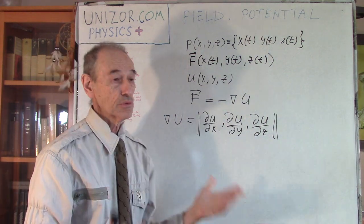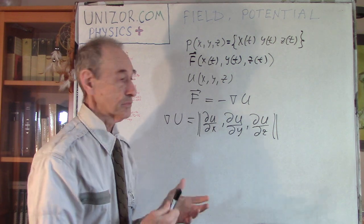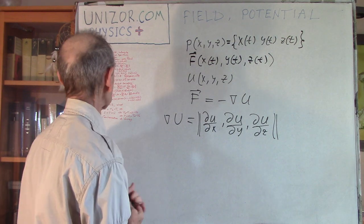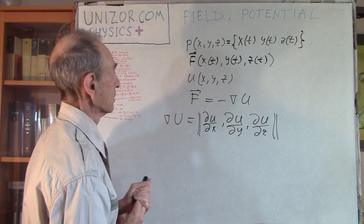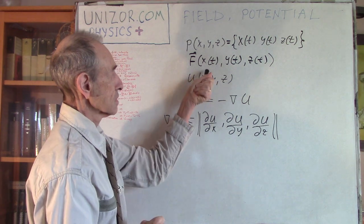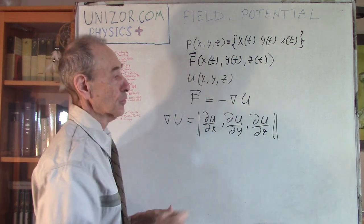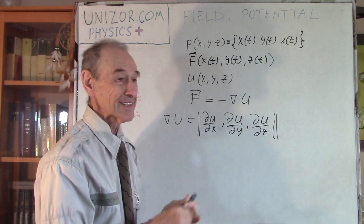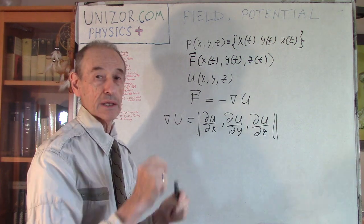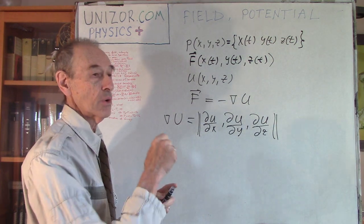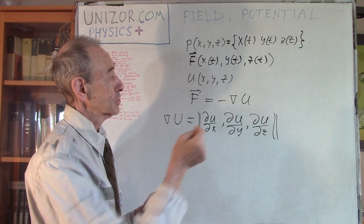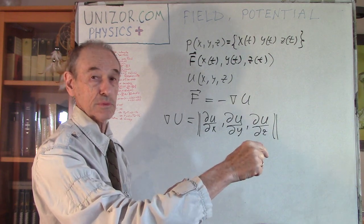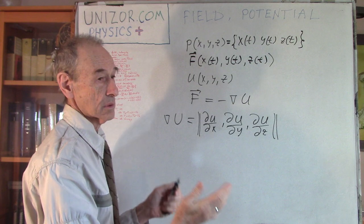From here I will derive the most important property of the field: the work which this force performs on an object moving along some trajectory is independent of the trajectory - it depends only on the beginning and the end point. No matter how the material point moves from point A to point B, no matter what the trajectory between these two points, the work will be the same. Let's prove this.